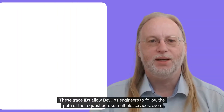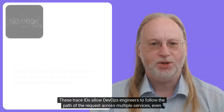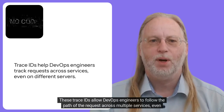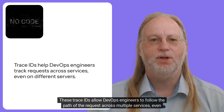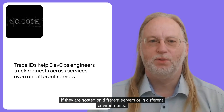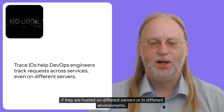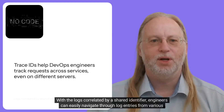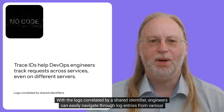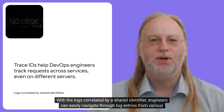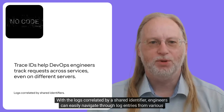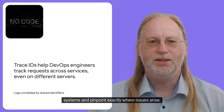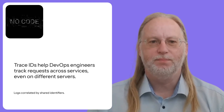These trace IDs allow DevOps engineers to follow the path of the request across multiple services, even if they are hosted on different servers or in different environments. With logs correlated by a shared identifier, engineers can easily navigate through log entries from various systems and pinpoint exactly where issues arise.